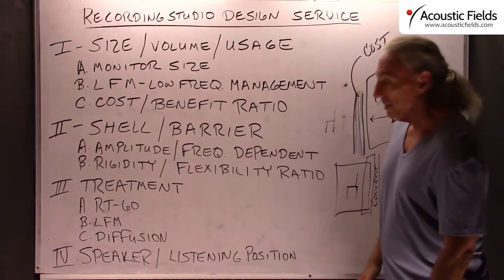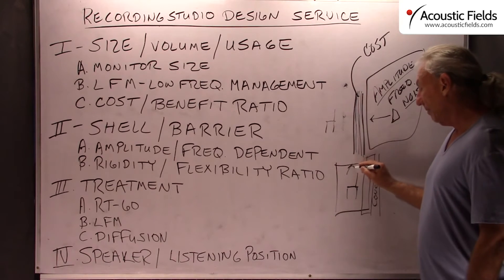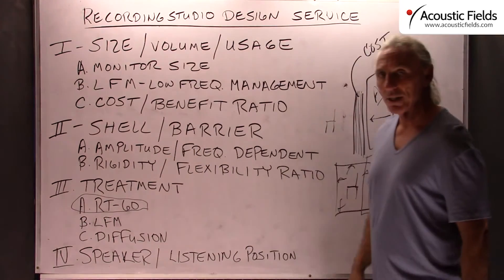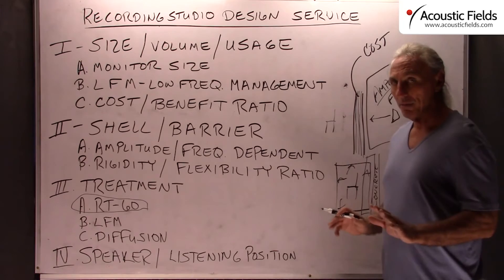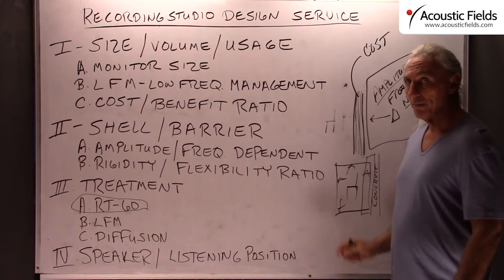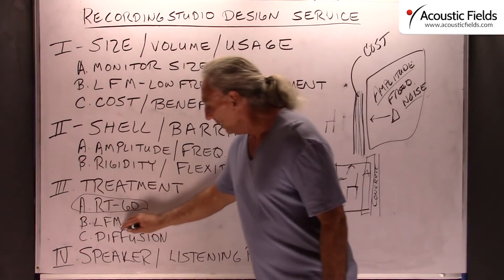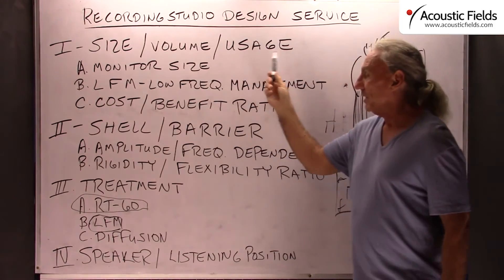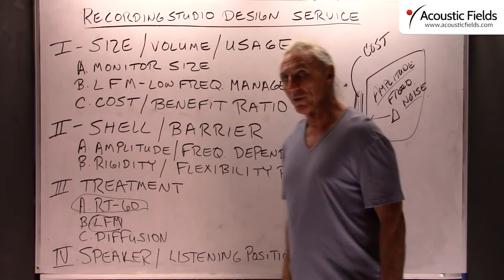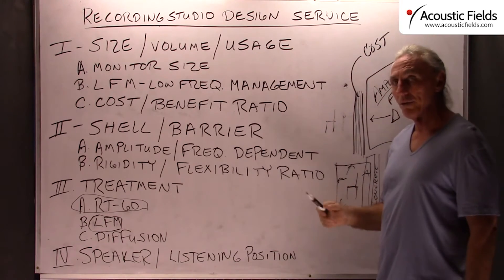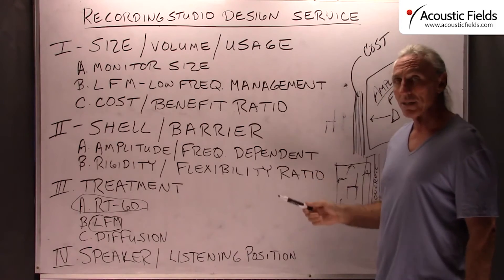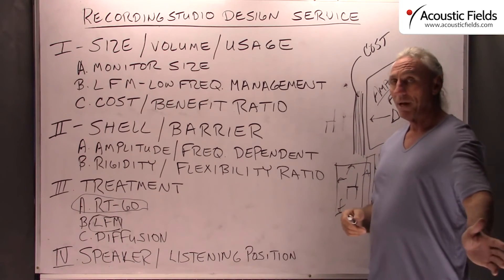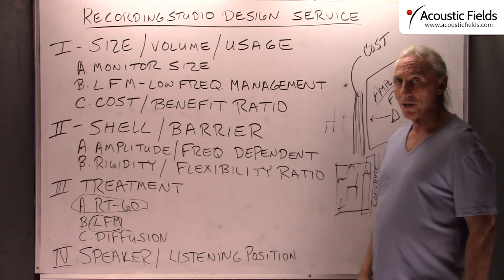The inside of the room is the treatment side. We have all the reflections off all the surfaces — that has to be dealt with, and the summation of all those reflections is RT60 times. That's not that difficult compared to building a barrier — much simpler. Here's the bigger issue: low frequency management. If you chose the right size and have the right volume for the particular usage, then you should have less low frequency management to deal with, and that's a good thing because low frequency management is expensive.